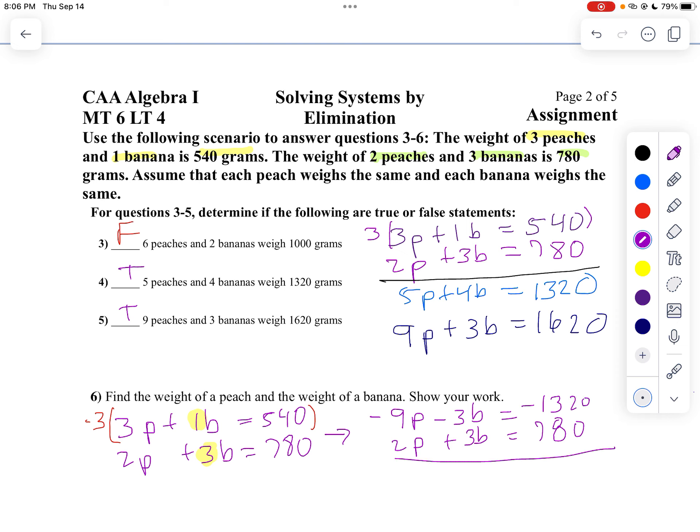Now, if I add them up, I'll get negative 9 plus 2 is negative 7p. Notice my b's cancel off. That's what I want to do. That's why I call it elimination. And the negative 1320 plus 780, the negative is bigger. So my answer is negative. I'm just going to subtract. 0 minus 0 is 0, 12 minus 8 is 4, and 12 minus 7 is 5. So I'll divide both sides by negative 7.